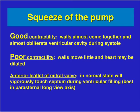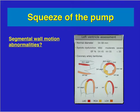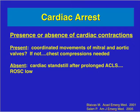When the patient is hypotensive, hypoxic, or in shock, you're simply determining: does the patient have good contractility, hyperdynamic contractility, or poor contractility? In good contractility, the walls almost come together and obliterate the ventricular cavity during systole. In poor contractility, the walls move little and the heart may be dilated. Look at this at the parasternal short axis papillary muscle level. You can also look for segmental wall motion abnormalities suggesting myocardial infarction as the cause of hypotension.